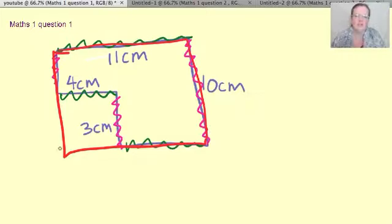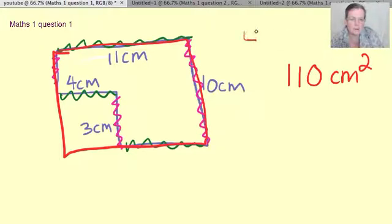That would be 11 times 10. You've got 11 lots going this way and 10 lots going that way. So 11 times 10 is 110 centimeters squared, that's the little squares like that.